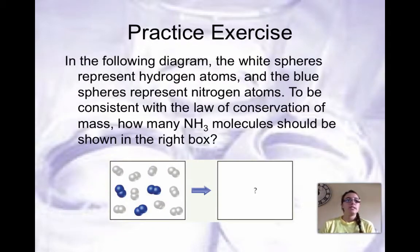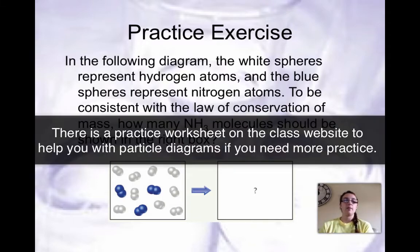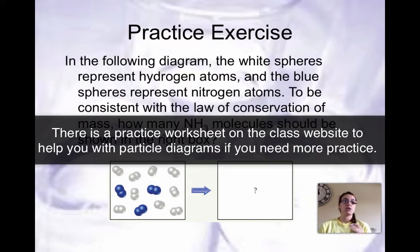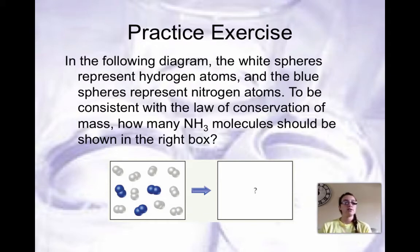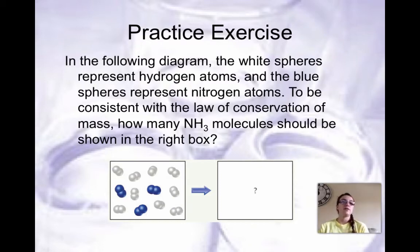Take a minute to try this practice exercise working with particle diagrams. AP Chem is moving in the direction of using particle diagrams to justify or explain concepts. In the following diagram, you have white spheres and blue spheres. To be consistent with the law of conservation of mass, how many ammonia molecules should be shown? Try this on your own, then look at sample exercise 3.1 in your book to check your answer.